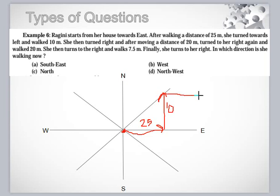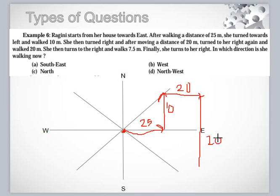She then turns toward right and moves a distance of 20. Then she turns to her right again and walks 20 meters. She then turns to her right and walks 7.5 — so this will be approximately 7.5.